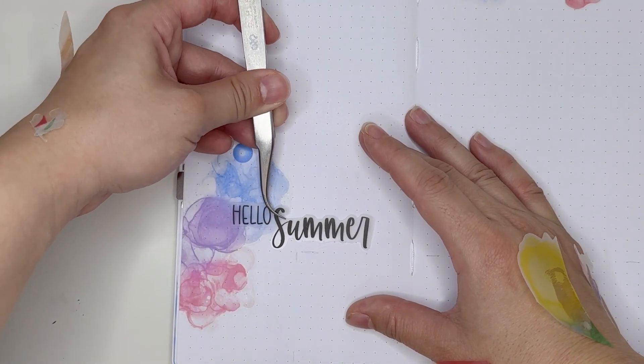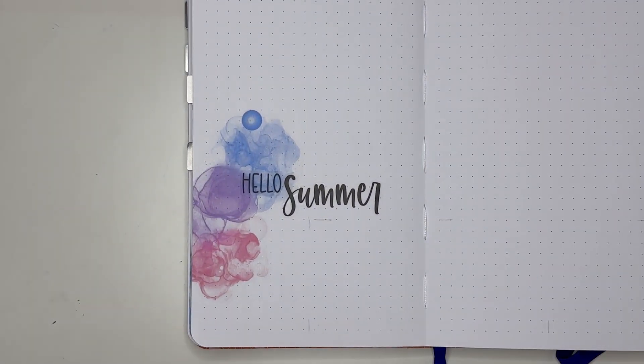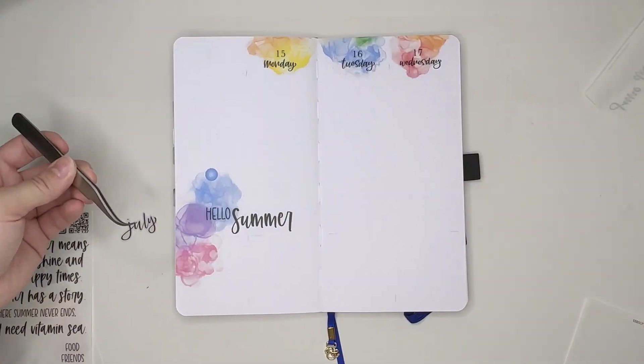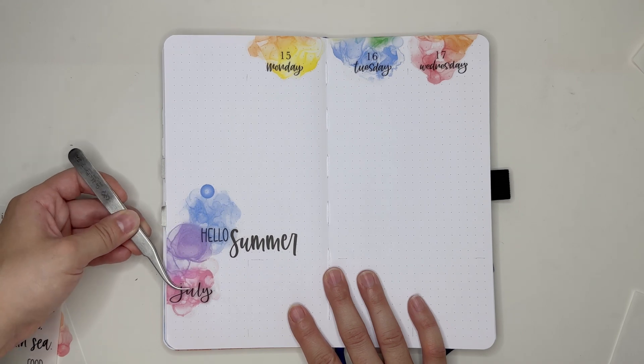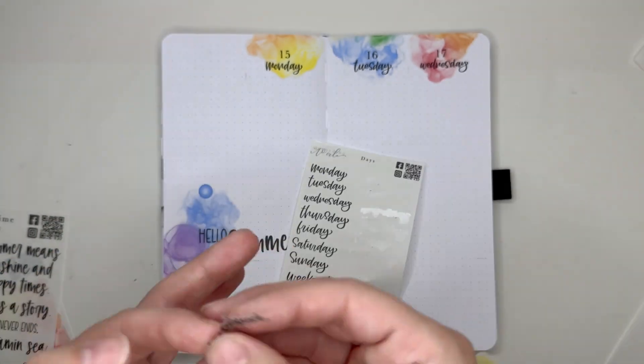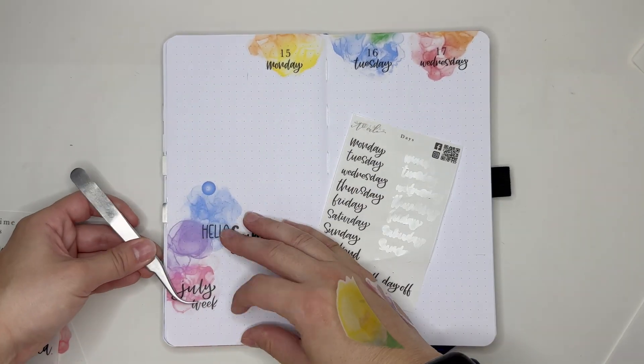Now that I have all the dates and days of the week down, I knew I wanted to use this Hello Summer sticker. But I wanted to put it down first before I put down the July month sticker and the week number stickers because I'm doing something a little bit different with this week spread, and that's part of why I ended up going with a vertical layout.